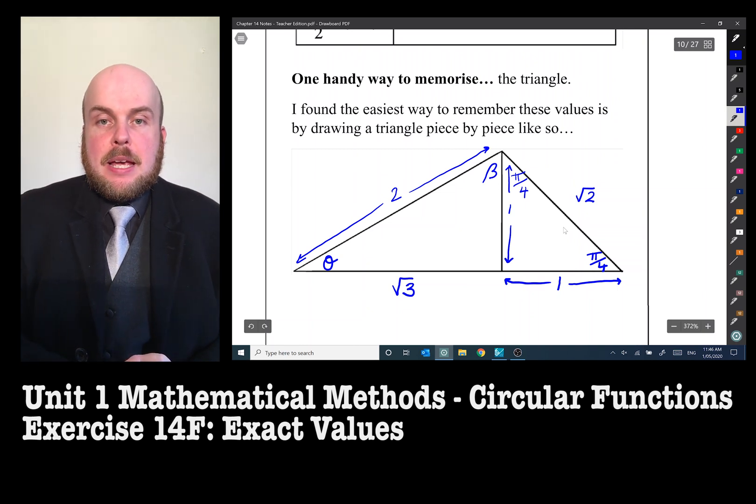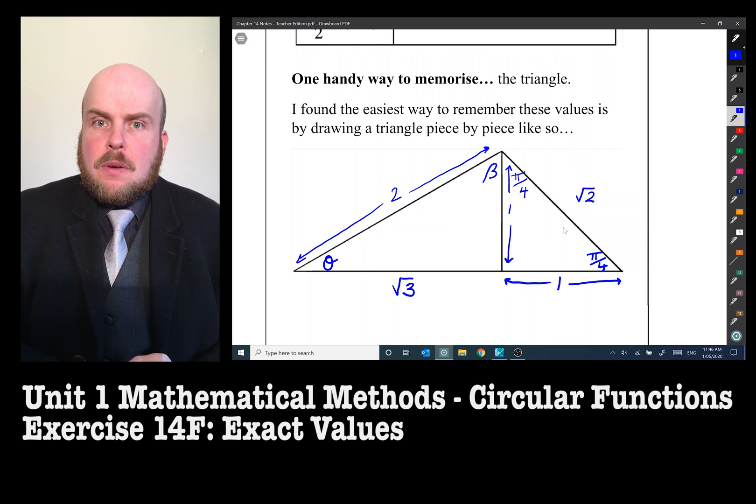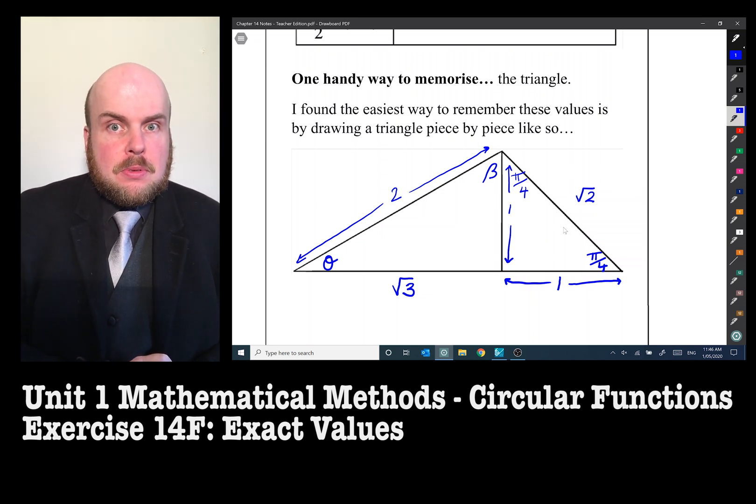I've got the angle down here. I've got the angle up here which I have symbolized with a beta. So which angle is going to give me a sine value of one half or one over two? So I need to know which one has the opposite one and the hypotenuse two.